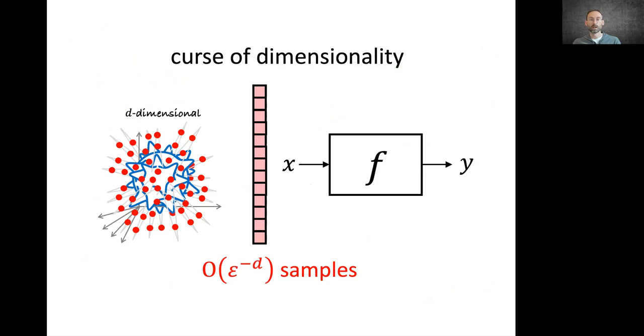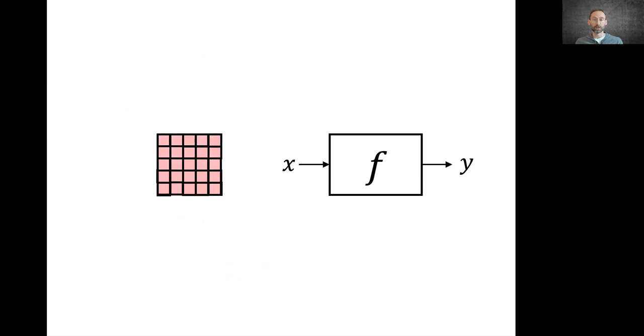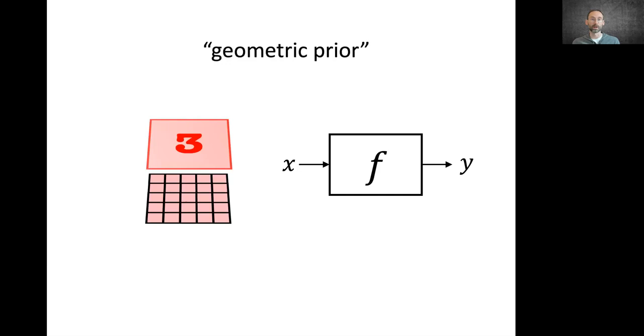Let's look again at this multi-dimensional image classification example that at first glance seemed hopeless because of the curse of dimensionality. Fortunately, we do have additional structure that comes from the geometry of the input signal. We call this structure geometric priors. It's a general powerful principle that gives us optimism and hope in otherwise dimensionality cursed problems.